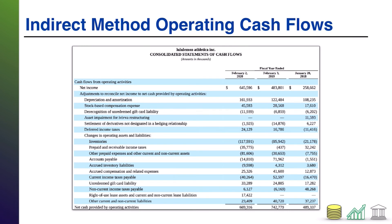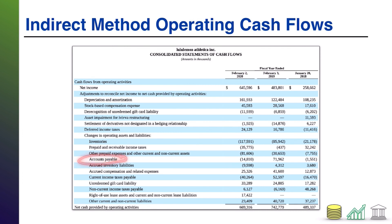Here's an example of an indirect method. Notice the first line under cash from operations is net income, and then they say 'adjustments to reconcile net income to net cash.' Here are all of those adjustments: depreciation — they've removed that effect — asset impairment, deferred income taxes, and changes in assets and liabilities such as changes in inventories, changes in accounts payable, and changes in income taxes payable. They're going through and determining what adjustments to make to net income to remove all non-cash items and add any operating cash not already included, in order to arrive at net cash from operating activities. The end goal is the same — just two different ways to get there — and while the indirect method is more complex, it creates efficiencies for the company since they don't have to prepare a separate schedule.